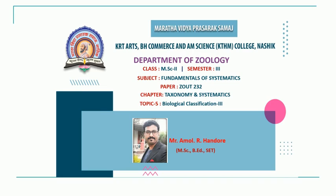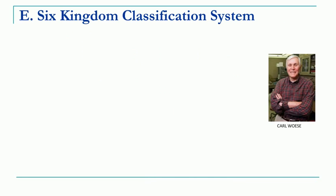In this last part of the biological classification lecture we will study the remaining systems which come after this. In the last lecture we saw how in the five-kingdom classification system, Whittaker introduced the fifth kingdom — that is kingdom Fungi — by which Fungi got a separate place as a kingdom.